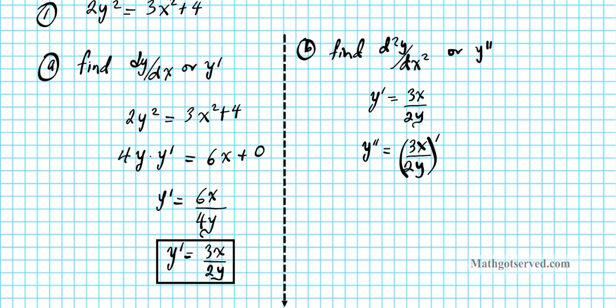Let's go over the quotient rule. For u over v, the derivative is (v·u′ − u·v′) divided by v². In this case u is 3x and v is 2y.